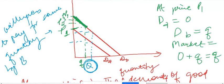Please think and let me know if this is clear because this is very important. At any price above P1, the demand by individual A is 0. Because the demand by individual A is 0, market demand is simply the demand by individual B. That is why at any price above P1, the demand curve of individual B becomes the market demand curve.